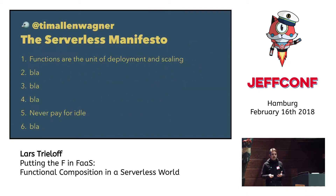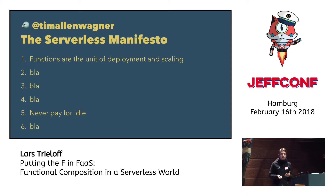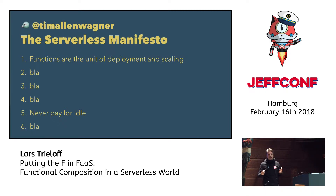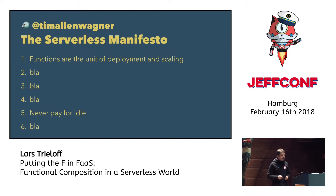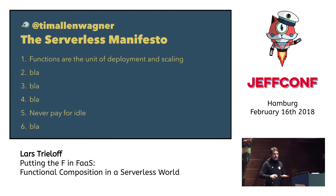The first person to learn from is Tim Allain Wagner, who is leading the Lambda business at Amazon — actually Paul's new boss. He brought up the Serverless Manifesto, which is really long like every manifesto, so I only skimmed it. But two key points: functions are the unit of deployment and scaling, and never pay for idle — never pay for people or software that isn't doing anything.